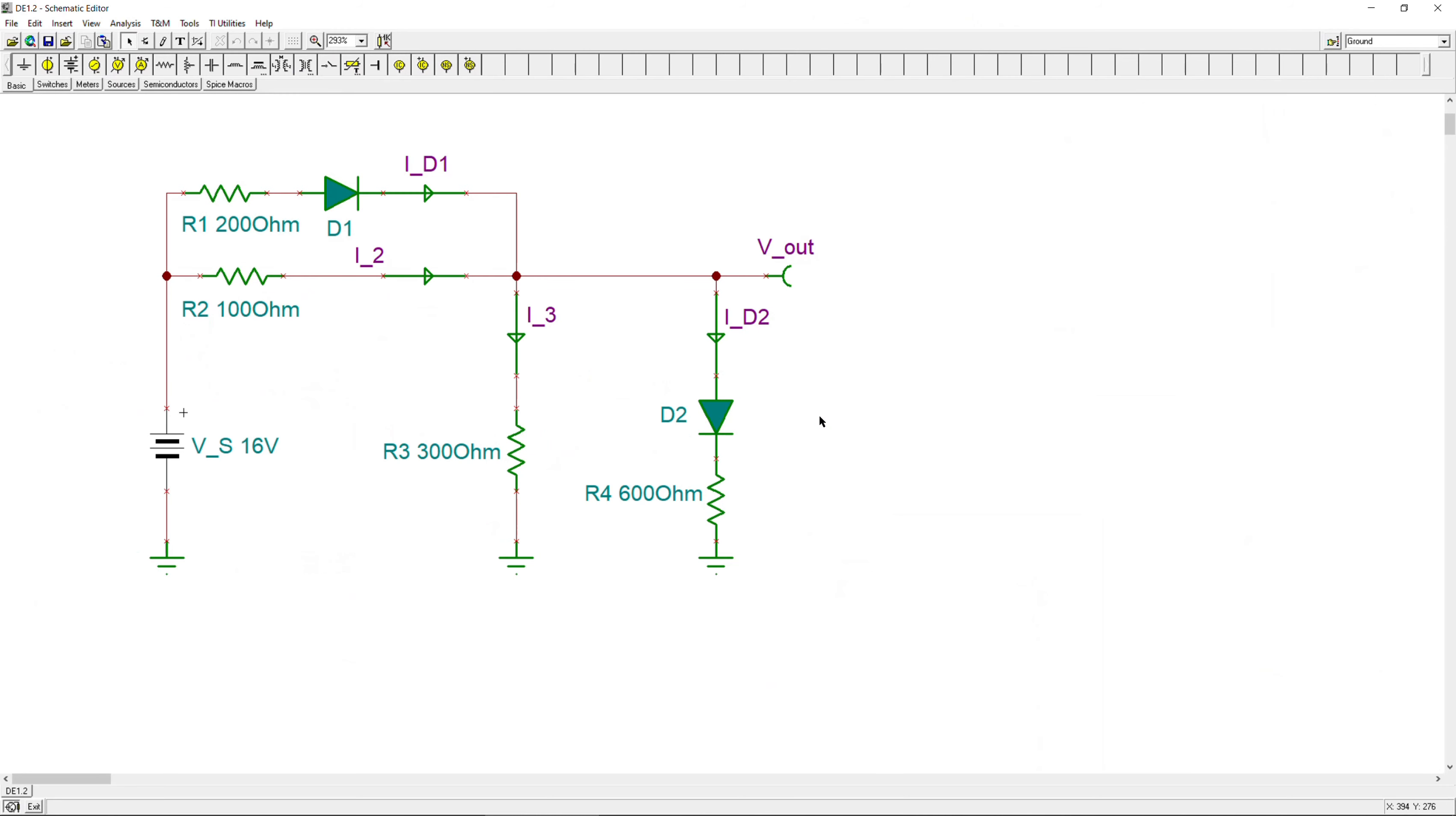All right, we are now here in the SPICE simulator. You can see the Vs, 16 volts. We have R1, I mean R2 and R1, and the diodes. And also the current arrows to measure the currents here, and also the voltage pin to measure the Vout here. Now let's see what the values are in this simulator again.